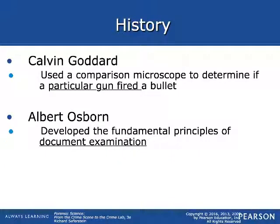Goddard — not the same as the rocket place — started using a comparison microscope, which lets you look at two specimens at the same time. He used comparison microscopy to determine if a specific gun fired a specific bullet. We don't have a comparison microscope, but we might be able to try comparing with our tablets.